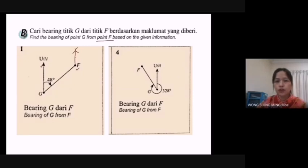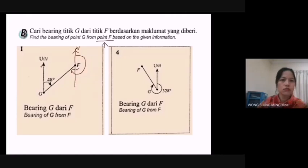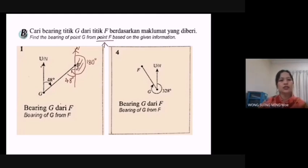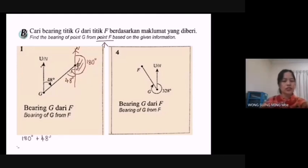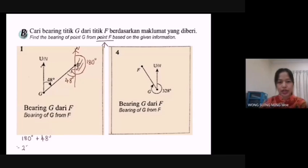Next, measure the angle from the north to the line GF in the clockwise direction. The bearing of G from F — this half is 180°. Using the alternate angle, this angle equals 48°. So the total angle from north going clockwise to line GF is 180° plus 48°, giving a bearing of 228°.